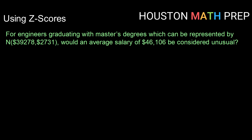Another question we can answer using Z-scores is whether or not a particular data value is unusual. Using this same information for engineers graduating with a master's degree — represented by a normal distribution with a mean of $39,278 and a standard deviation of $2,731 — would an average salary of $46,106 be considered unusual? Remember, we consider values between negative 2 and 2 to be usual, and anything outside of that to be unusual. So if the Z-score is above 2 or below negative 2, we would consider it unusual.